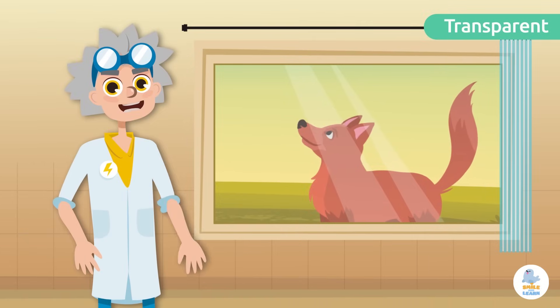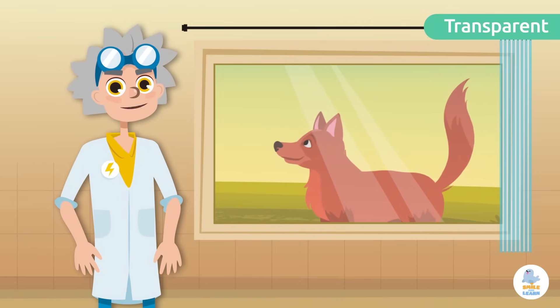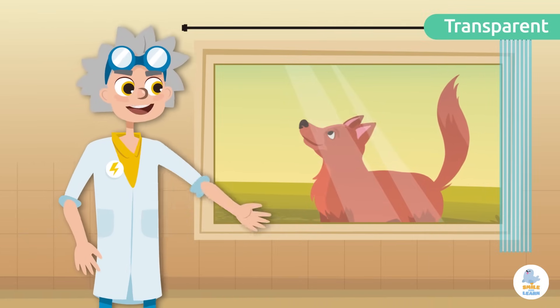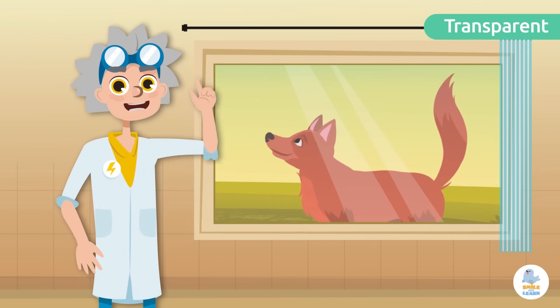Transparent materials allow light to pass through them allowing us to clearly see objects behind them. Glass is an example of a transparent material.